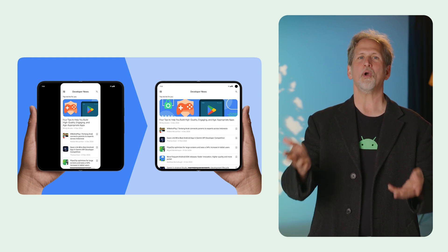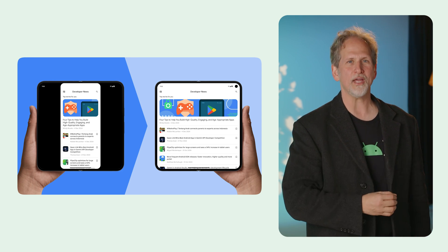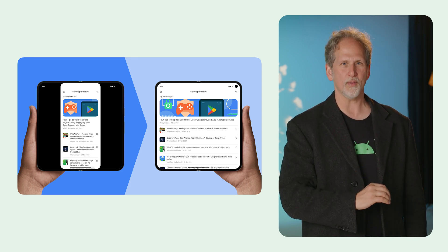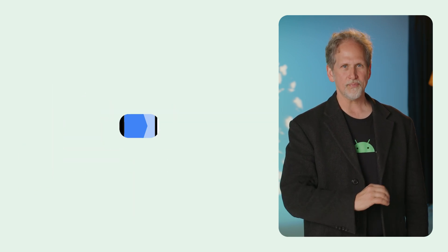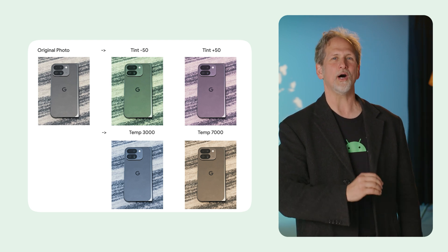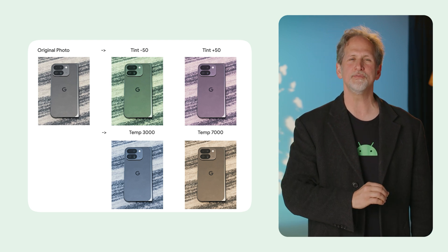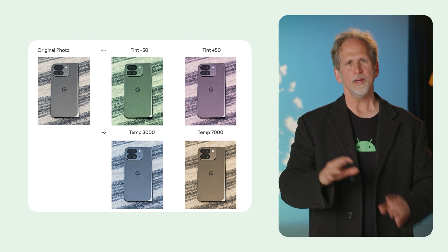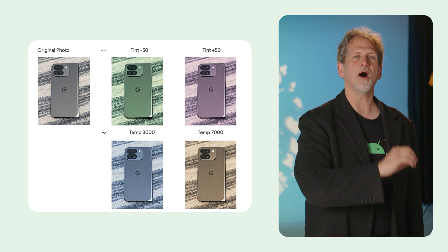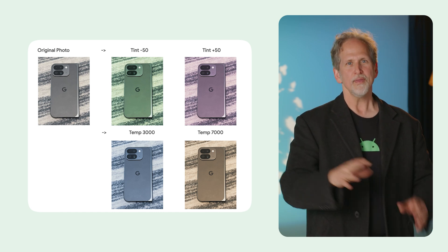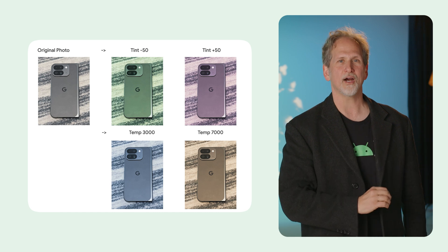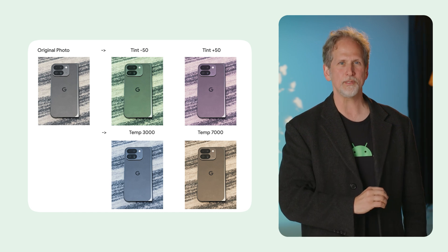Android 16 also adds the progress-style notification template for live updates to help users monitor ongoing activities. It has enhancements to media quality, including the advanced professional video format, precise color temperature and tint adjustments, hybrid auto exposure, camera night mode scene detection, and Ultra HDR with HEIC support.